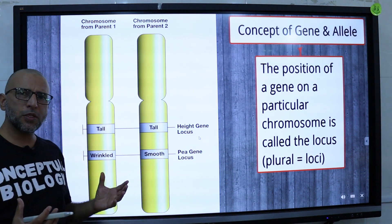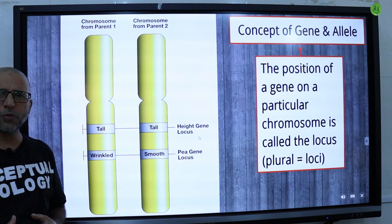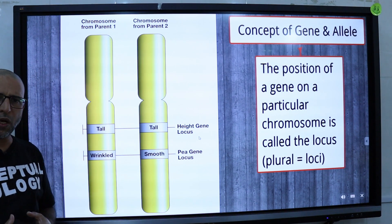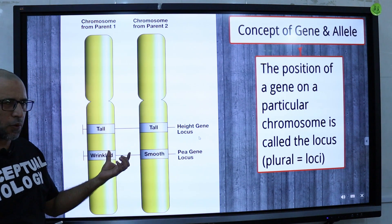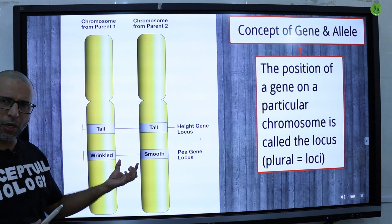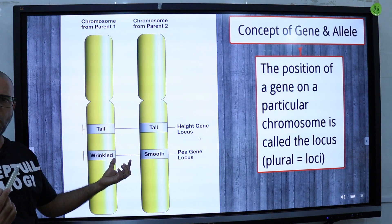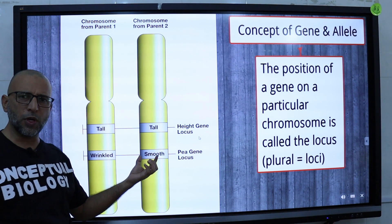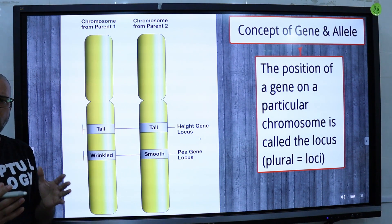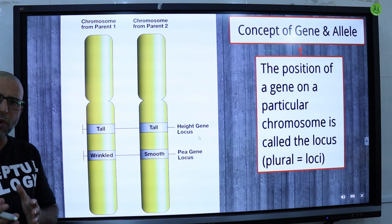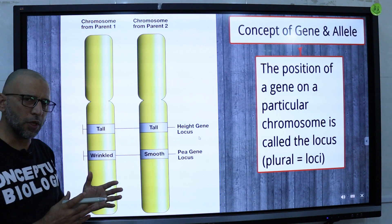Chromosomes are present in pairs, and humans have 23 pairs of chromosomes for a total of 46 chromosomes. One copy of each chromosome in a pair is inherited from the female parent and the other copy is inherited from the male parent. This explains why children inherit some of their traits from their mother and others from their father.